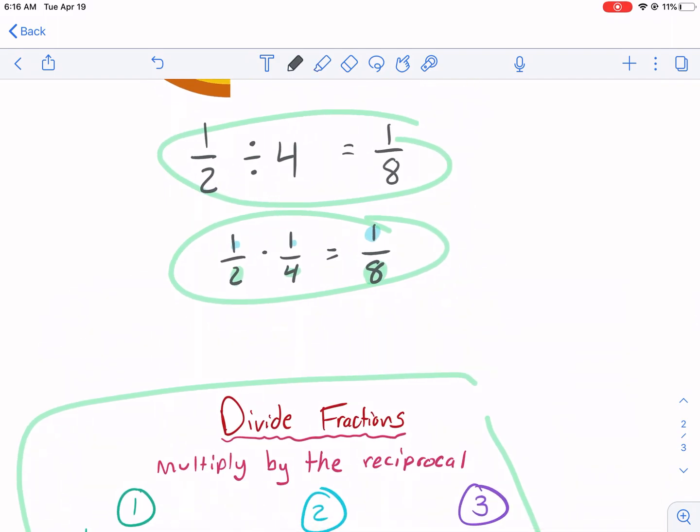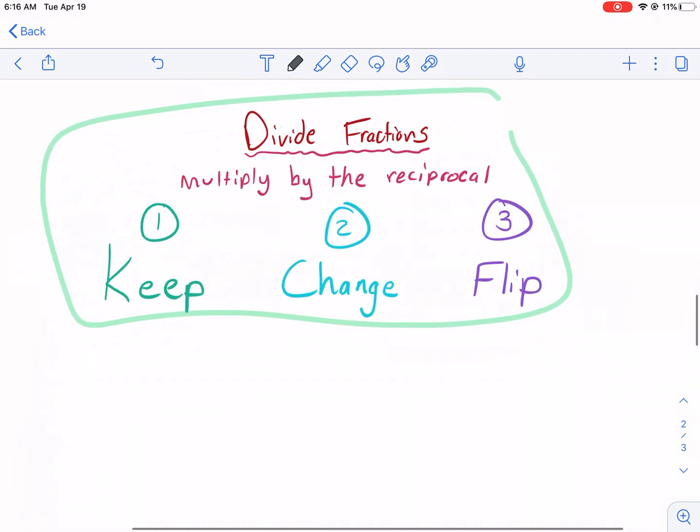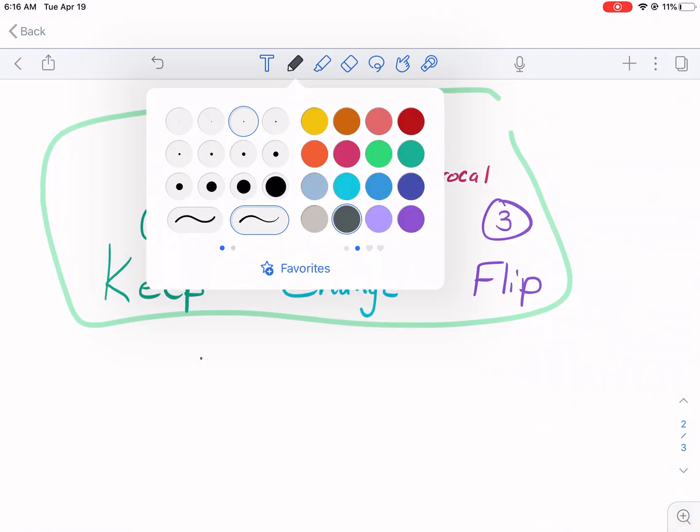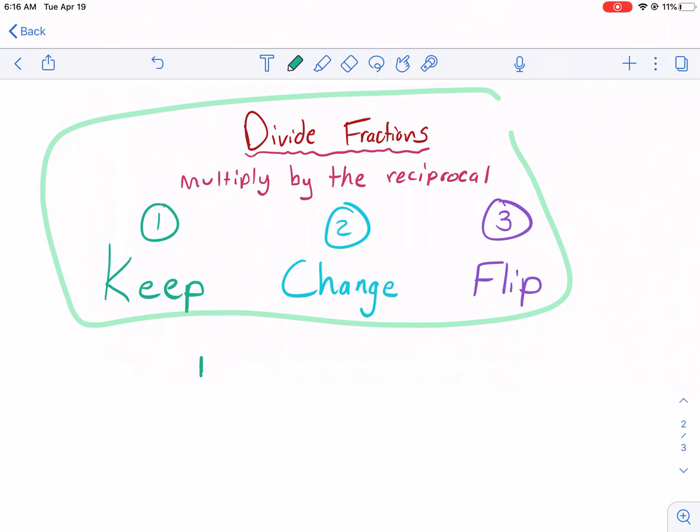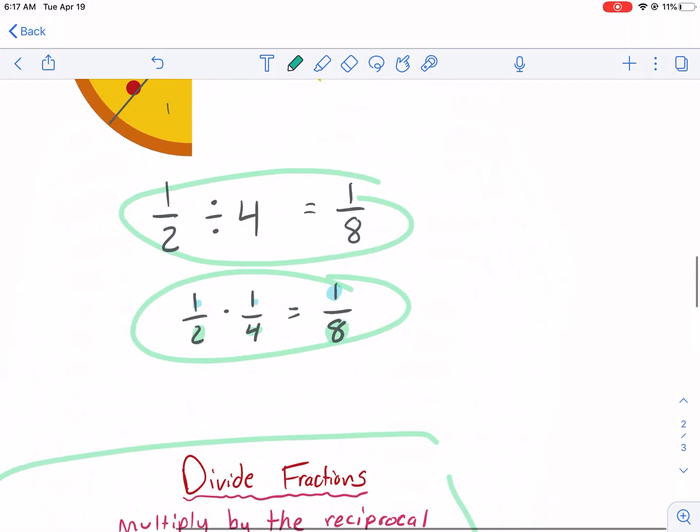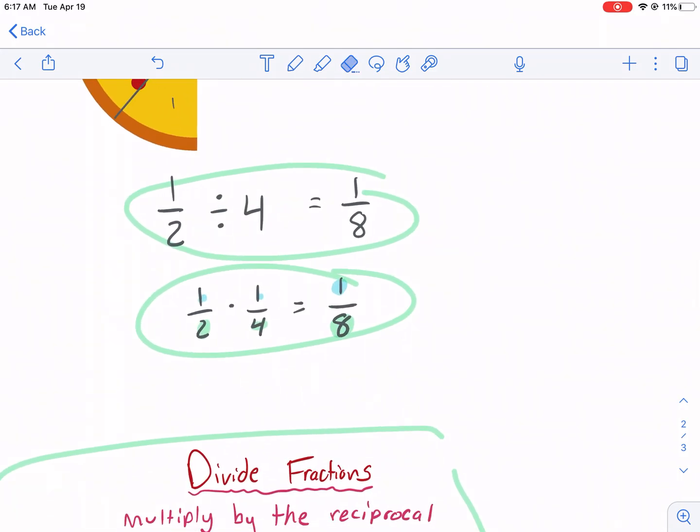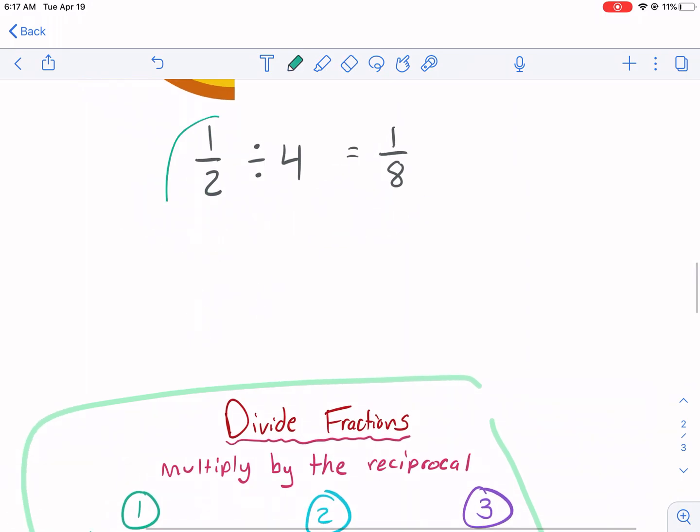Let me demonstrate what that looks like with our example. First off, we have keep. That means we're going to keep the first fraction the same. One fourth - nope, it was one half. That's what it was. One half. We're going to keep that the same. Let me get rid of some of this clutter. Got to keep my room clean here. So we're going to keep 1/2 the same.